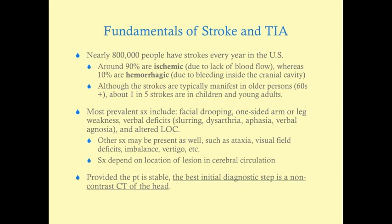Although strokes typically manifest in older people, about one in five strokes actually happen in younger adults and in children. That's really important to remember — don't stereotype symptoms based on age. If somebody comes in with focal neurologic symptoms that are of acute onset, you really have to include stroke in your differential diagnosis.